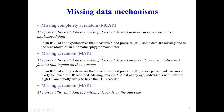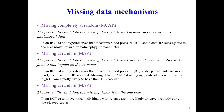Missing not at random (MNAR) means the probability of missingness depends on the outcome itself. An example is a randomized clinical trial of antipsychotics where people who see no improvement drop out. The reason they dropped out is the actual value of the outcome — the value we want to measure. This is the MNAR case.